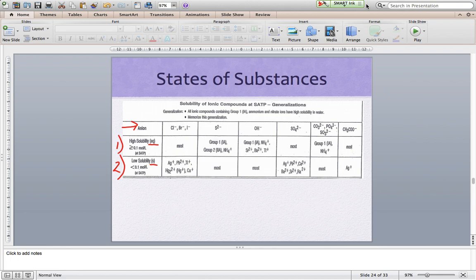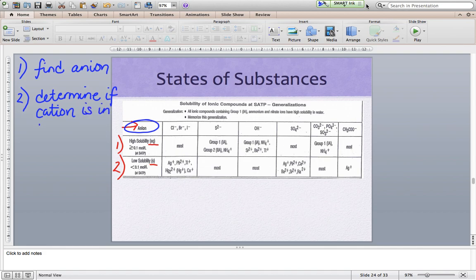So how do we use this table? A few steps that you need to know. Make sure you jot these down. First thing that we want to do is we want to find our anion. We want to find our anion in this top row here. If you read across, there are a bunch of anions listed. The next thing we want to do is we want to determine if the cation falls into row one or two. And I'm referring to these rows one and two here. That might be a little bit confusing. Let's do some examples.